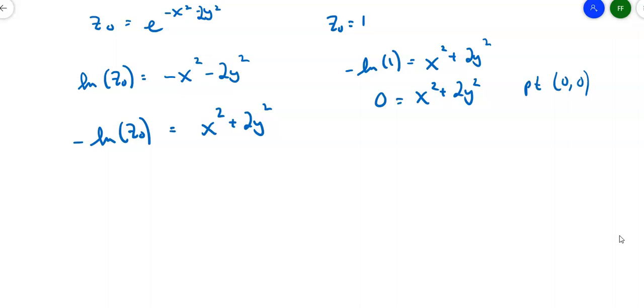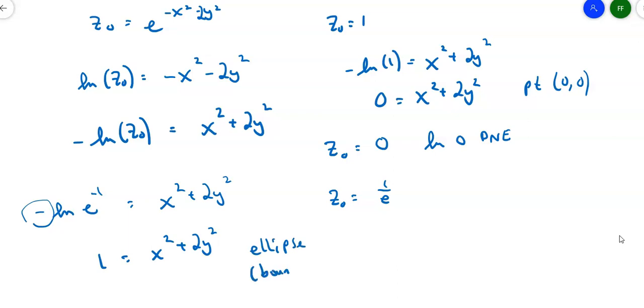What if z sub 0 was the reciprocal of e? So z sub 0 equals 1 over e. I would get negative natural log of 1 over e, which is e to the negative first, equals x squared plus 2y squared. Natural log of e to the negative first is negative 1. Apply that negative to the negative 1, we get 1. So 1 equals x squared plus 2y squared. It's an ellipse, the biggest of the ellipses you're going to get. That's the boundary ellipse. Any other ellipses fall inside of that.